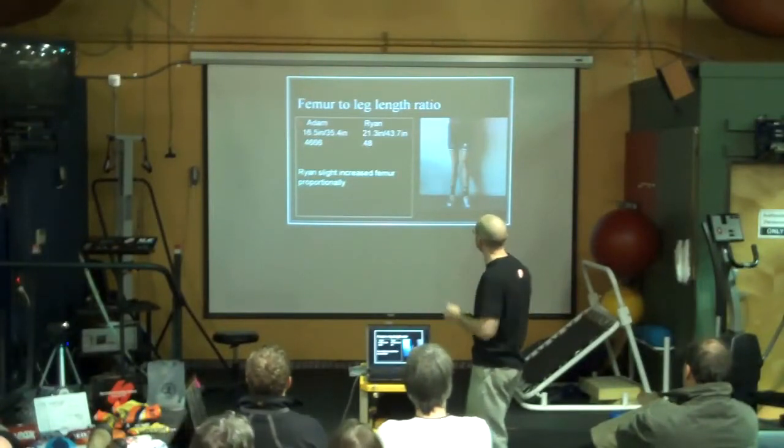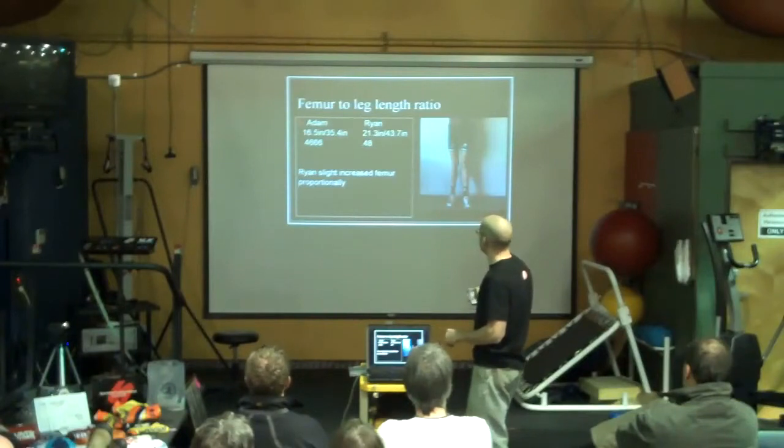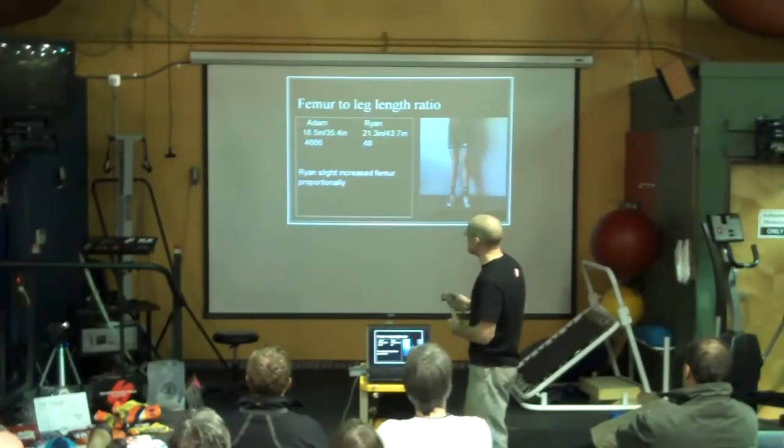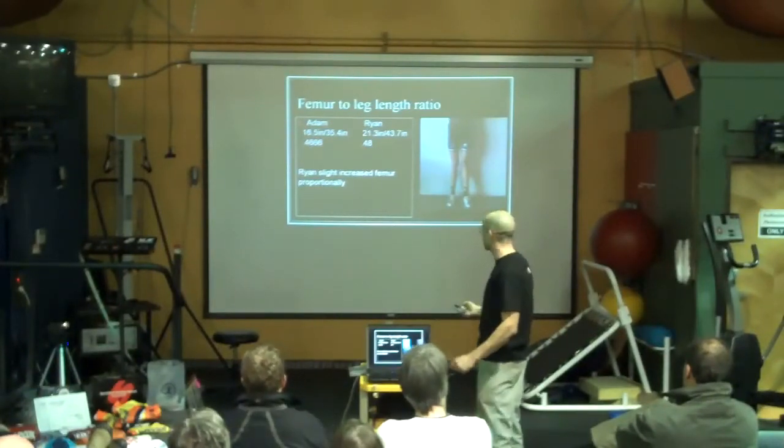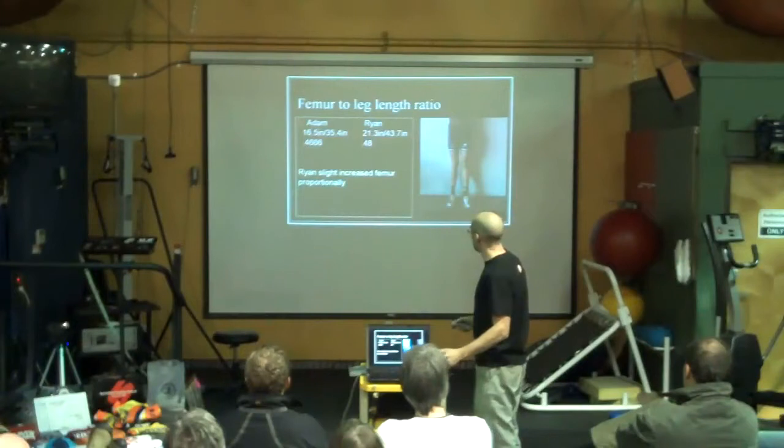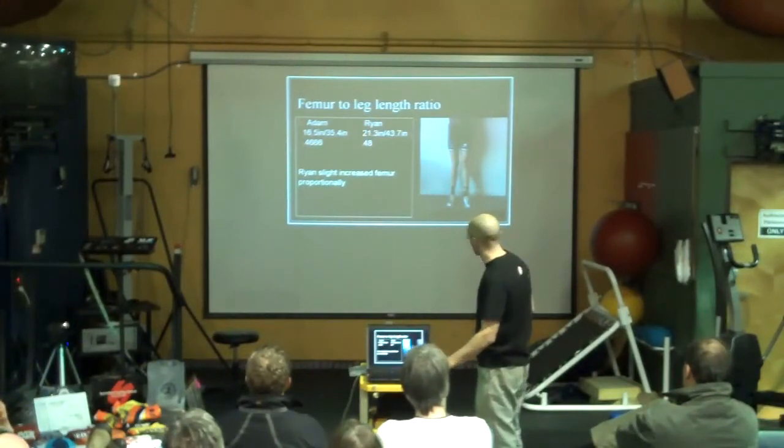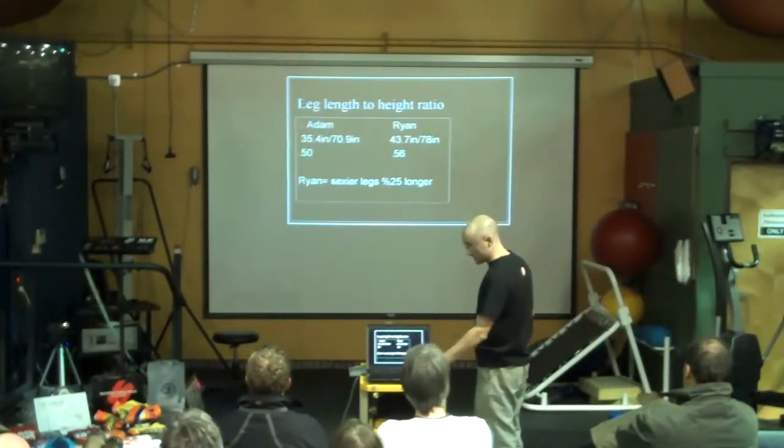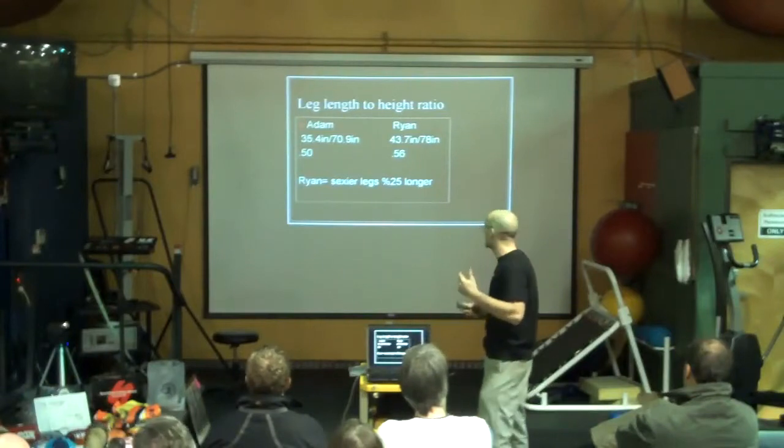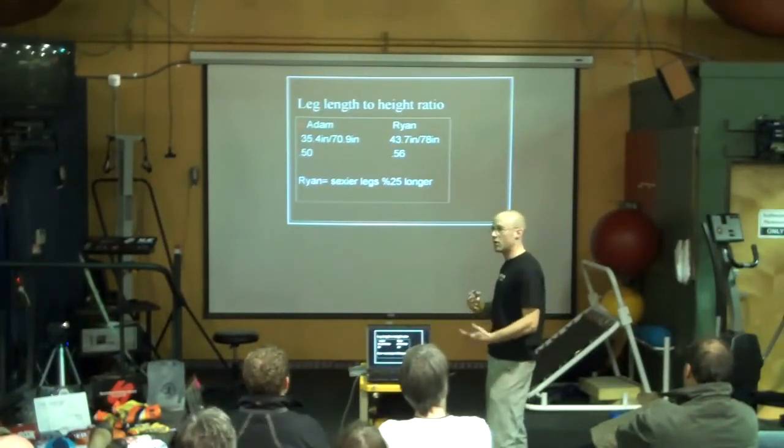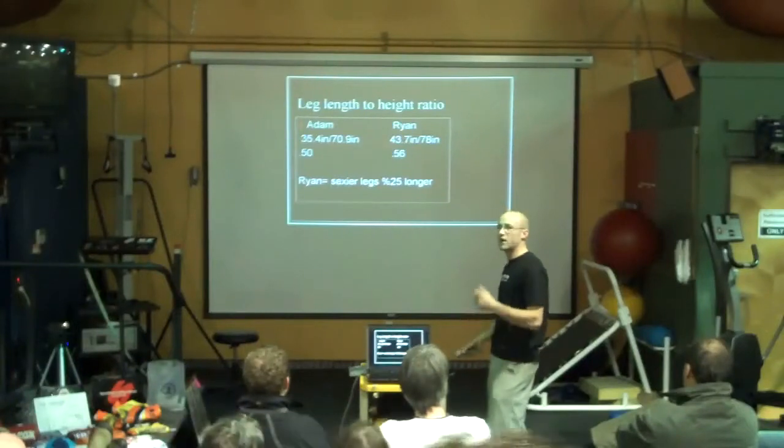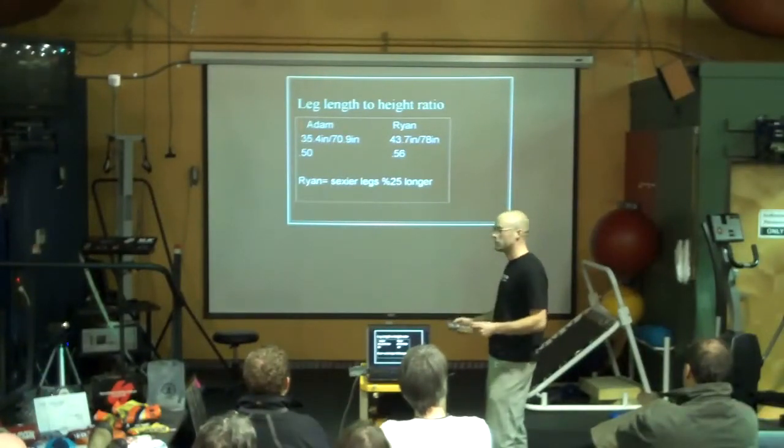Looking at femur lengths, Ryan has huge femurs, and even compared to his whole leg, Ryan's femurs are even longer out of the entire length of his leg than Adam's. Not by much, but proportionally he has huge femurs. And you have to think, if he has long femurs, all the musculature that goes along with the femur is also that much longer. Quadriceps and hamstrings are some of those dominant muscles in producing force on the body.